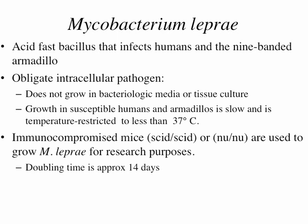Immunocompromised mice — either severe combined immunodeficiency or nude mice, which don't have T-cells — are used to grow M. leprae for research purposes. The doubling time in those mice for the organism is approximately 14 days.